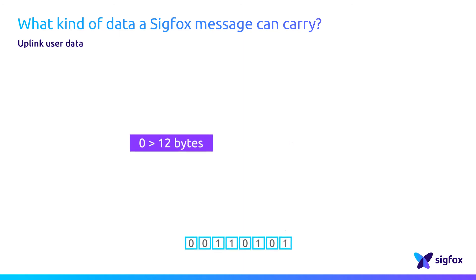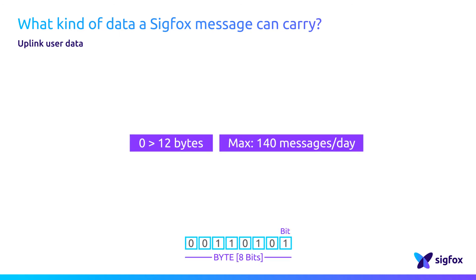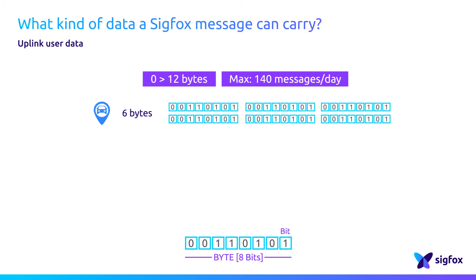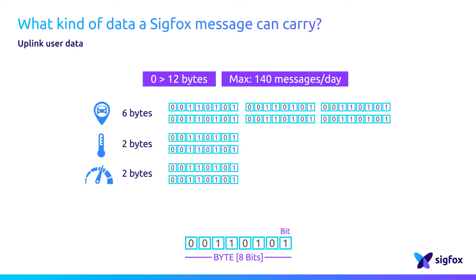The volume of data an object can send in each message through the Sigfox network is 12 bytes. But objects are not as chatty as people. 12 bytes is, for example, 2 GPS coordinates down to 3 meters precision, 6 lab thermometer reports within a minus 100 to plus 200 degree range with 0.004 degree precision, 12 reports of speed radar up to 255 kilometers per hour, or 96 switch reports like day-night, hot-cold, on-off.